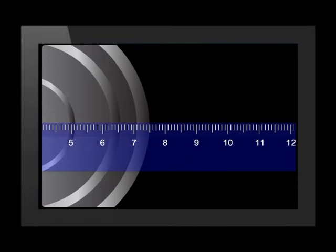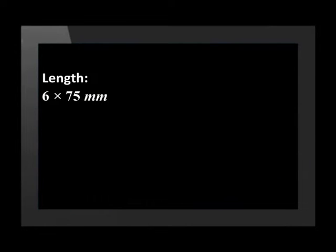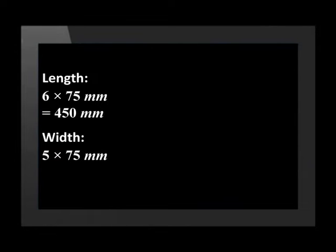Now we can determine the length and the breadth of the box needed for the 36 tins. The calculation for the length of the box is 6 times 75 mm, which gives us 450 mm. The width is calculated by multiplying 5 by 75 mm, which gives us 375 mm.